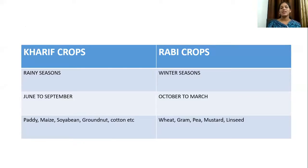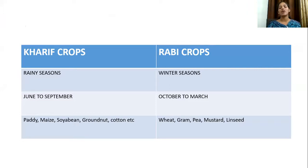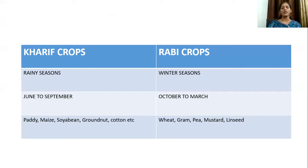Kharif crops are the crops which are grown in the rainy season, and Rabi crops are the crops which are grown in the winter season. Kharif crops grow from June to September, and Rabi crops from October to March. Examples of Kharif crops: paddy, maize, soya bean, groundnut, and cotton. Examples of Rabi crops: wheat, gram, mustard, and peas.